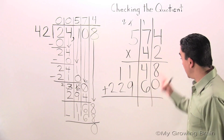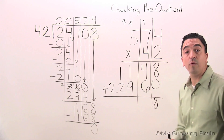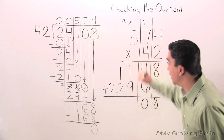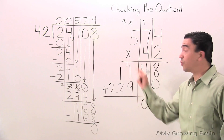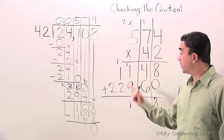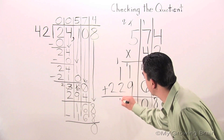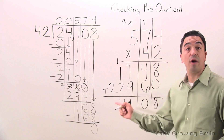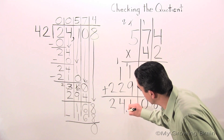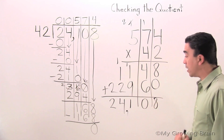Now I'm going to add. 8 plus 0 is 8. 6 plus 4 is 10. Regroup the 1. 9 plus 1 is 10, plus 1 is 11. Regroup the 1. 2 plus 1 is 3, plus 1 is 4. Drop the 2. Put in my comma. The product is 24,108.